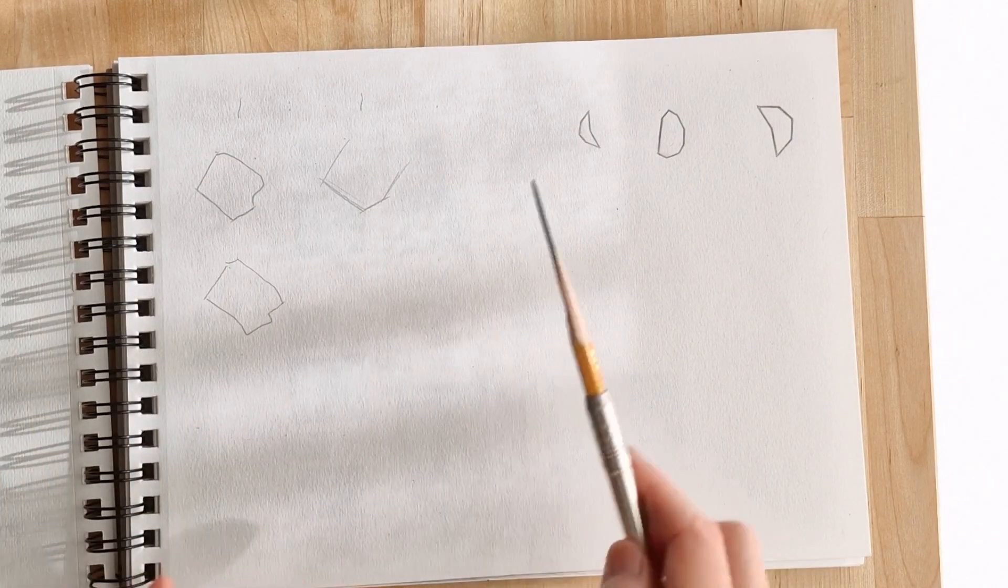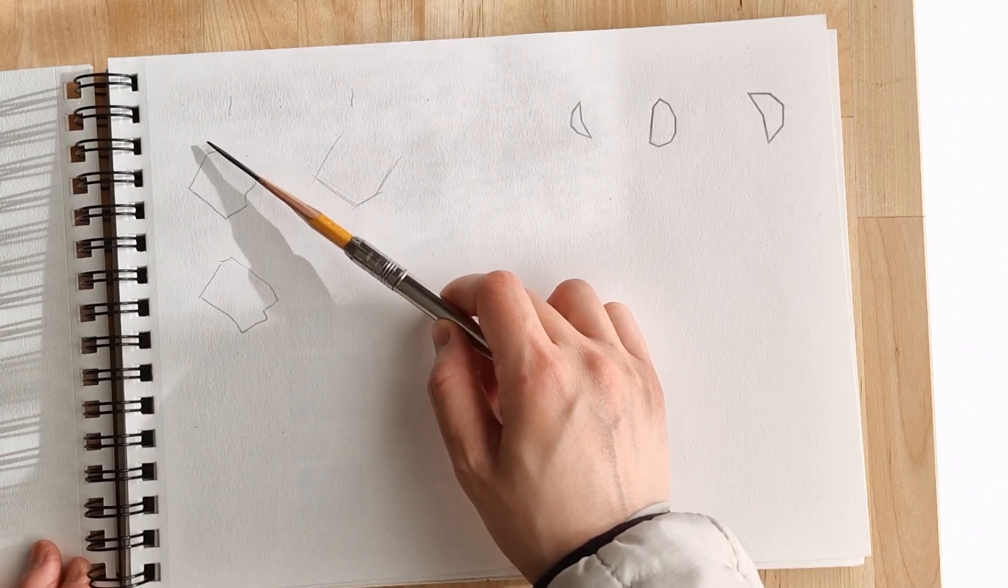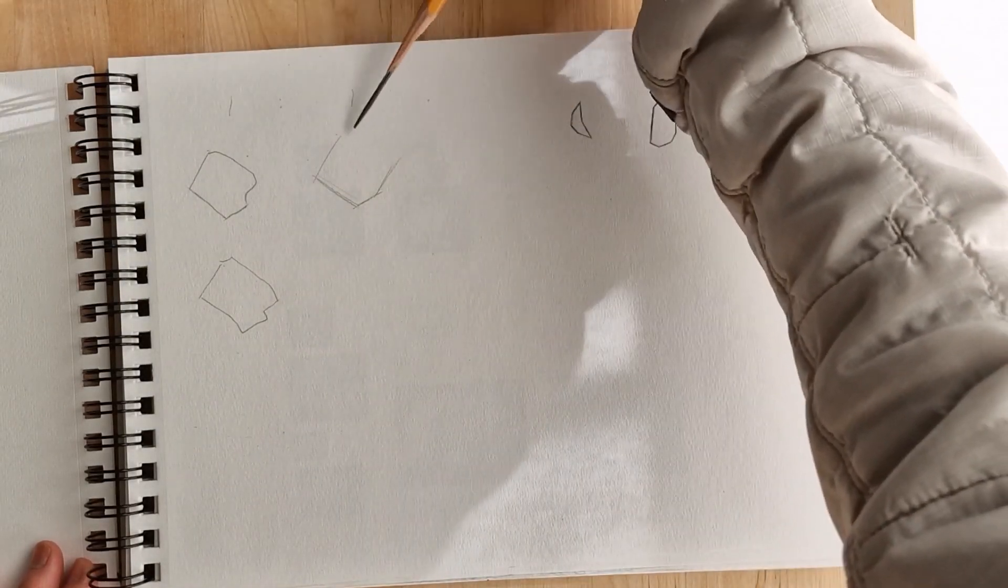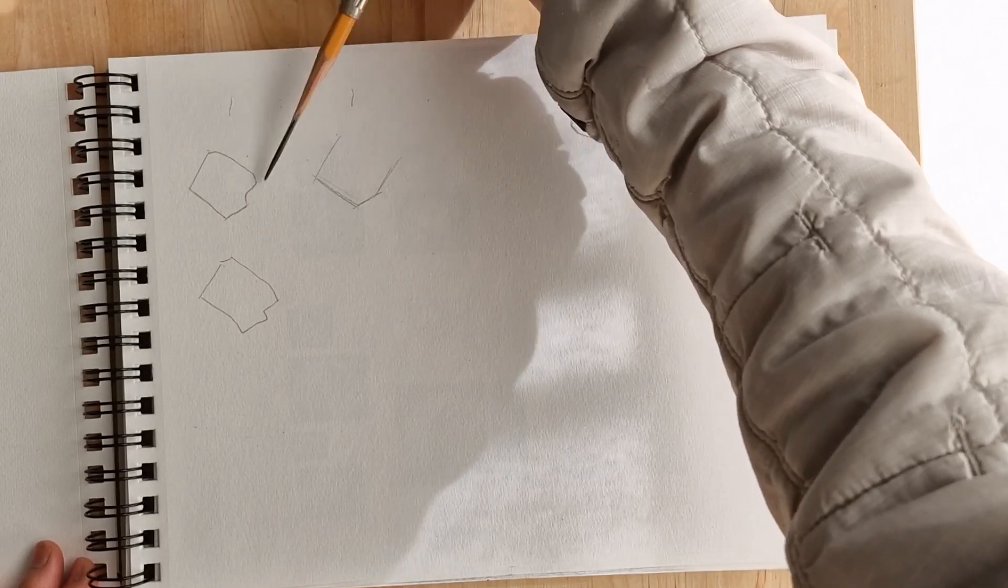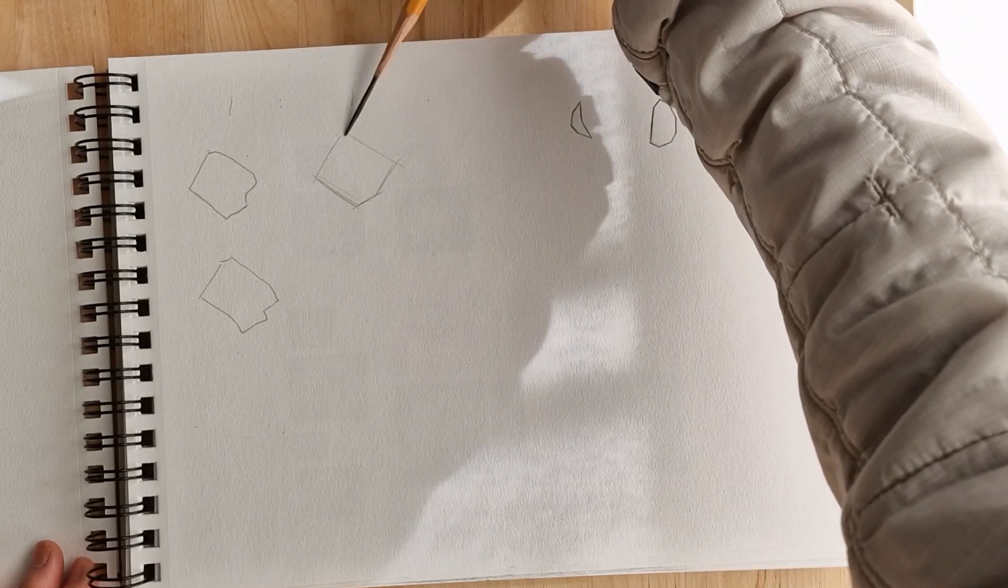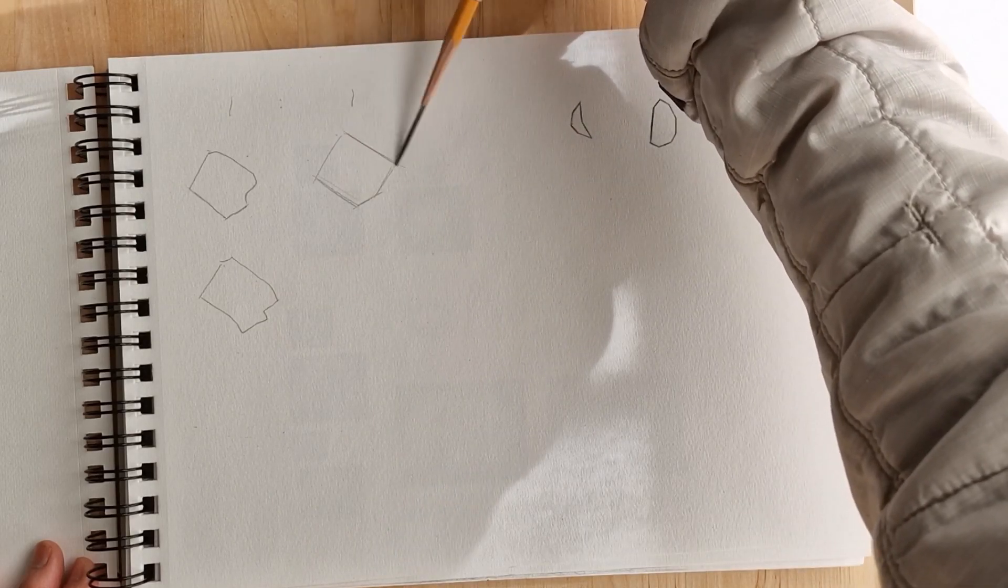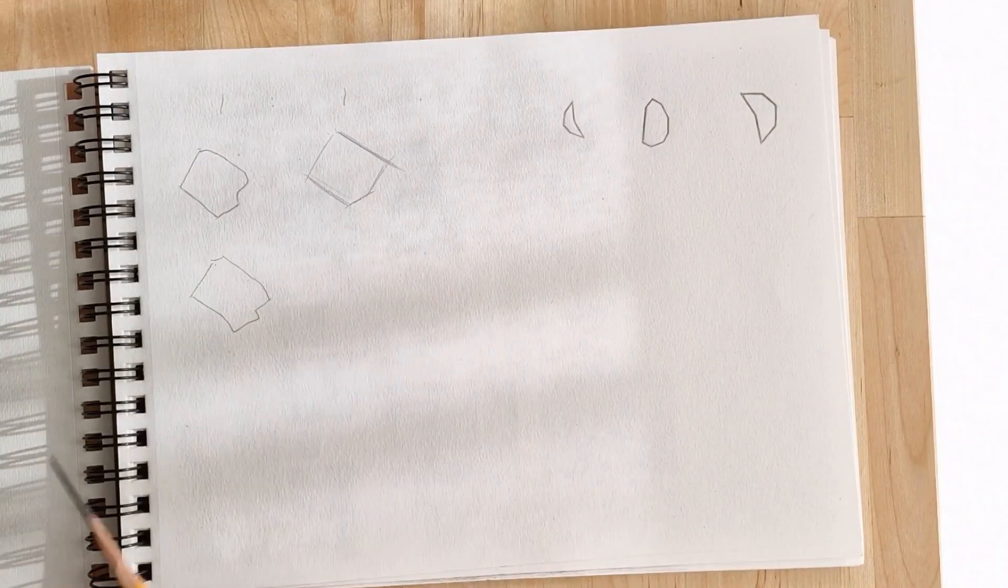Then I will close the shape like this, just going a general line, ignoring these corners, just finding the general direction of the outer point.